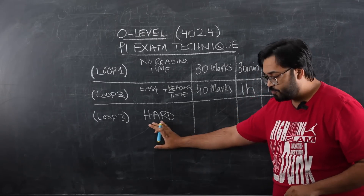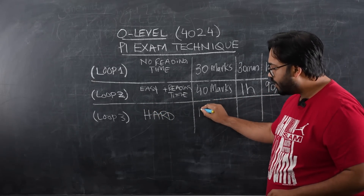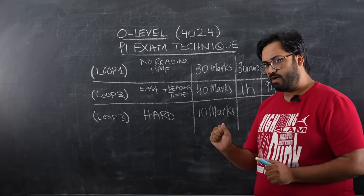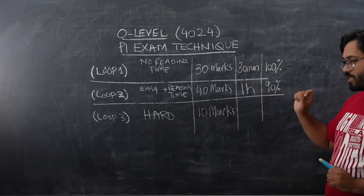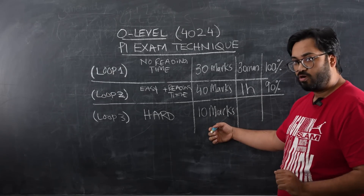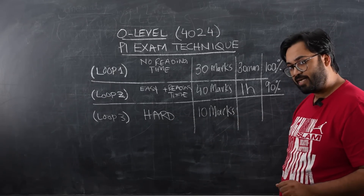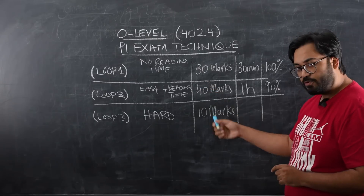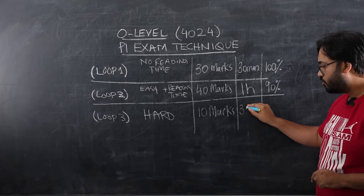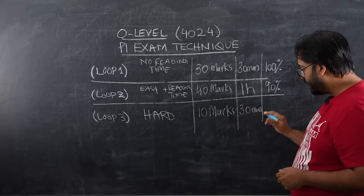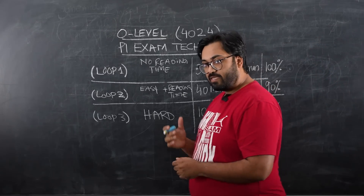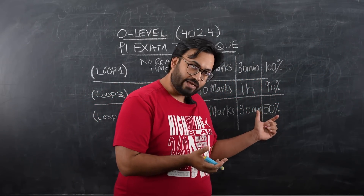Once you're done with Loop 2, we have Loop 3, which generally has around 10 marks — the really hard questions in the exam. At this point, we have spent 30 minutes on Loop 1 and one hour on Loop 2, so we still have 30 minutes left for these 10 marks. Our aim is just to get 50% of them right. We are not aiming to get all the harder parts correct — just figure out some portion of them.